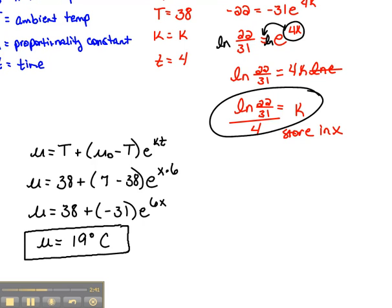Which makes logical sense. If it starts out at 7 degrees, we would expect after 6 minutes for it to be warmer. So 19 degrees Celsius is logical. Now we want to find out what happens after 11 minutes, so a little bit more time has passed.